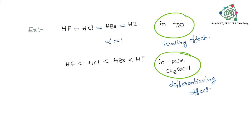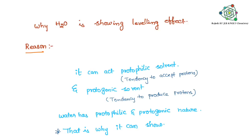Why can it make all strong acids completely dissociate? That means dissociation constant is equal to one. If you take differentiating solvent, it's not like that - it shows difference.